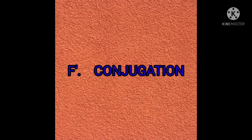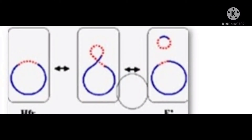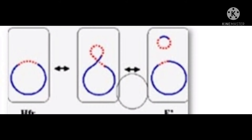F' conjugation. This is the third type of conjugation that we are discussing today. We have already studied what is an HFR cell. In case of an HFR cell, the F plasmid is integrated into the main bacterial DNA and it replicates along with the main bacterial DNA.